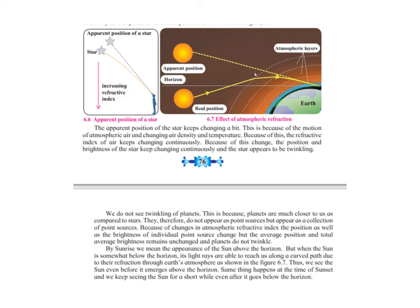In the same way, we will be seeing about how atmospheric refraction affects the position of the sun also. During sunrise, what do we mean by sunrise? Sunrise means the appearance of the sun above the horizon. When the sun is somewhere below the horizon, its light rays are able to reach us along a curved path due to its refraction through the Earth's atmosphere, as shown in figure 6.7.